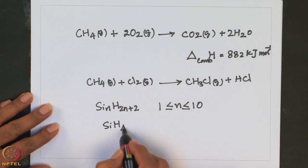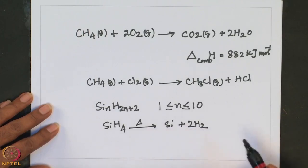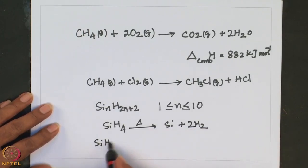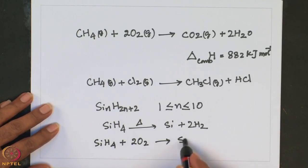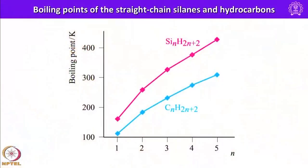If we heat SiH4, it gives Si plus 2H2. If we take SiH4 and pass oxygen gas, SiH4 reacts to form SiO2 and water. The boiling points of silanes as well as hydrocarbons increase with increase in the number of atoms in the chain, and the same is true for silanes as well.